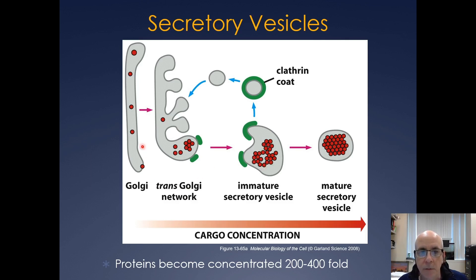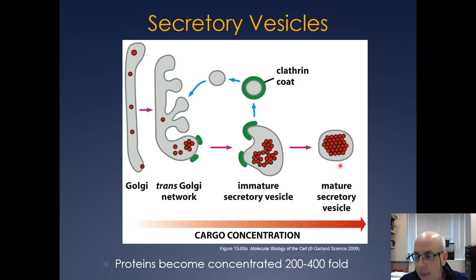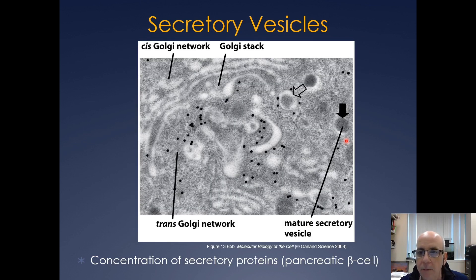Here's how the secretory vesicles are made. You have secreted cargo going through the trans-Golgi and then getting to the trans-Golgi network. They can be pinched off by clathrin-coated vesicles. The vesicles actually get concentrated by a recycling event where the clathrin picks up and recycles some of the membrane, leaving the cargo behind until you have a concentrated mature secretory vesicle. This happens to be an image of a pancreatic beta cell that's secreting insulin, and here you can see the mature secretory vesicles getting concentrated as it goes.